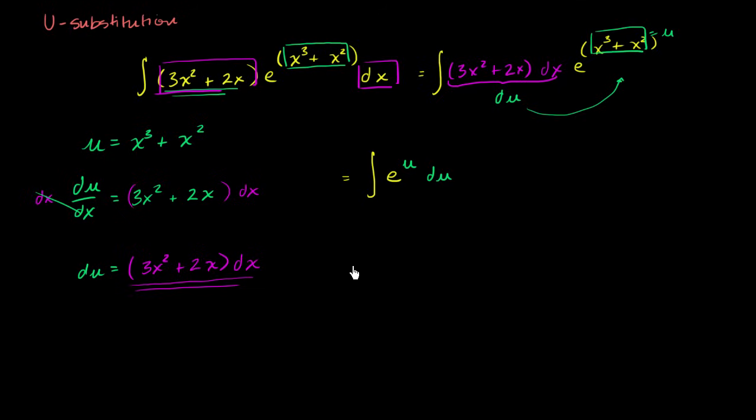And so what would the antiderivative of this be in terms of u? Well, the derivative of e to the u is e to the u. The antiderivative of e to the u is e to the u. So it's going to be equal to e to the u. Now there's a possibility that there was some type of a constant factor here. So plus c.